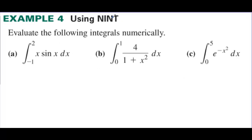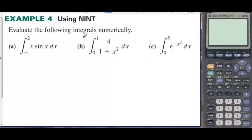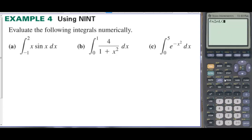Example four: use NINT to evaluate the following integrals numerically. For part A, the integral from negative one to two of x sine of x dx. We don't know how to do that analytically yet, but we can find the value. Go to Math, then down to FNINT and press enter. Enter x sine of x, then x as the variable, going from negative one to two. The solution is 2.043.